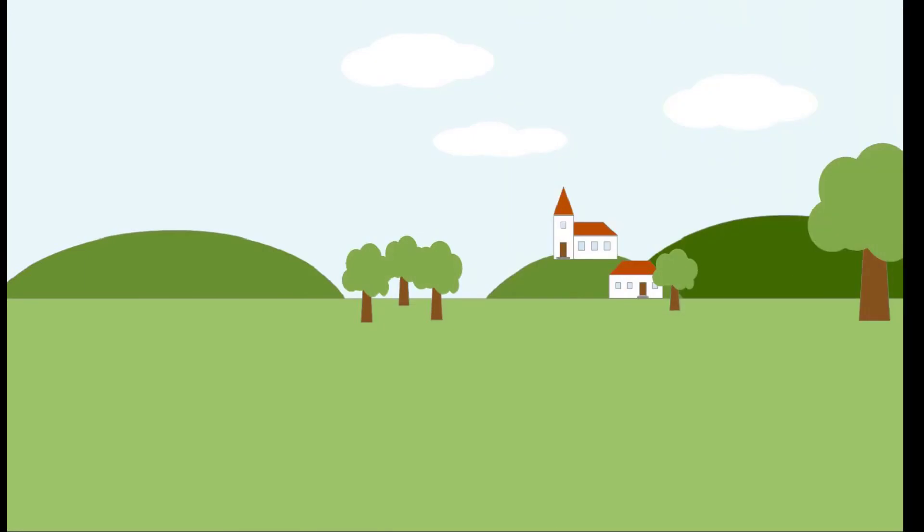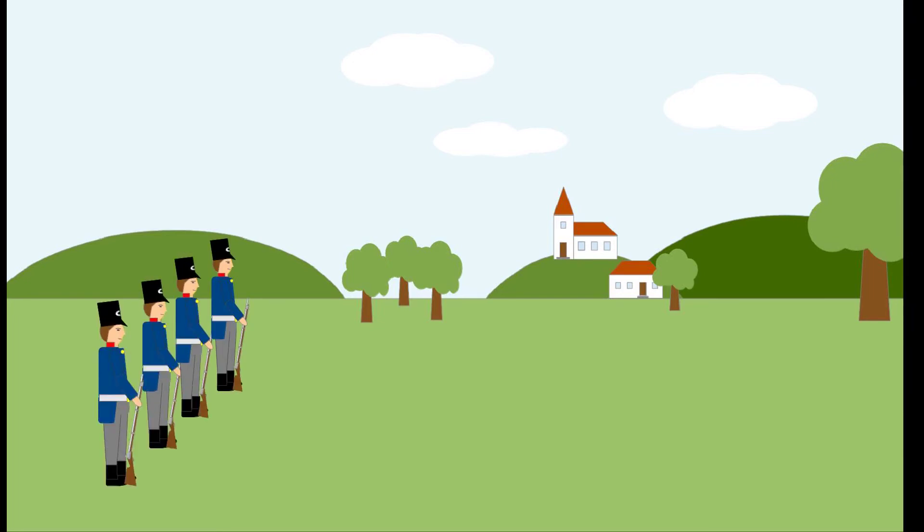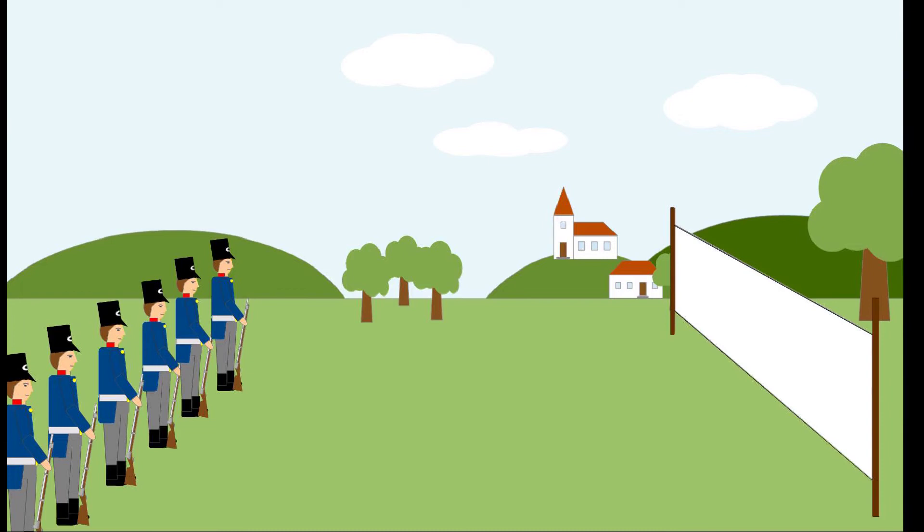So how accurate were the muskets exactly? To test that, the Prussian army had assembled 200 of their soldiers. They were equipped with the standard musket of the Prussian army of that time. The soldiers were ordered to fire at a big sheet of cloth that was 1.88m high and about 31m wide. That was about the size of an infantry column at that time.